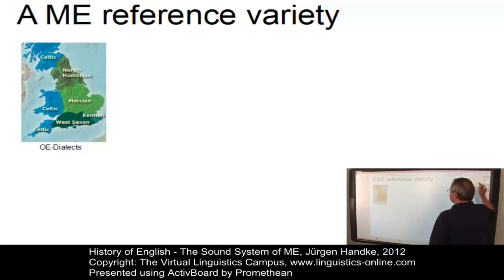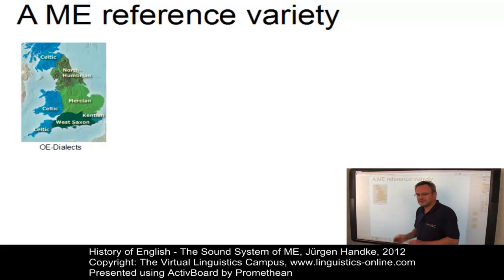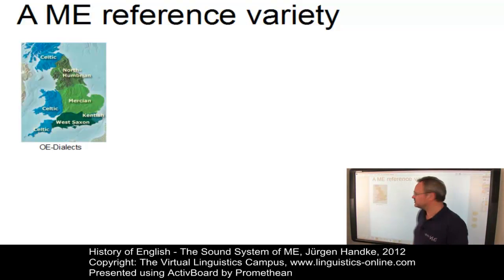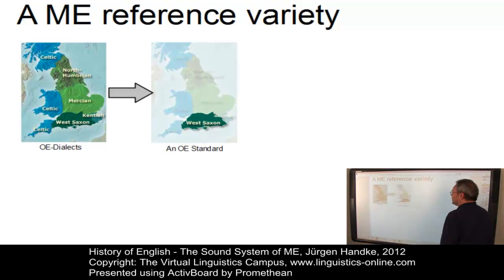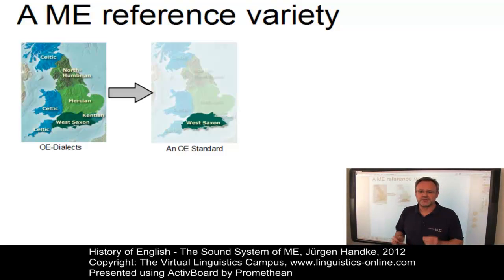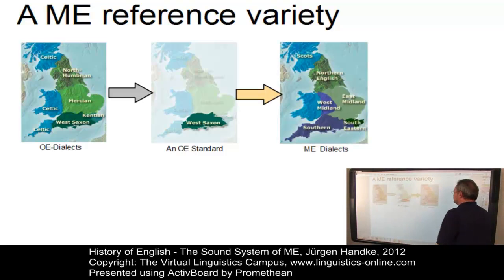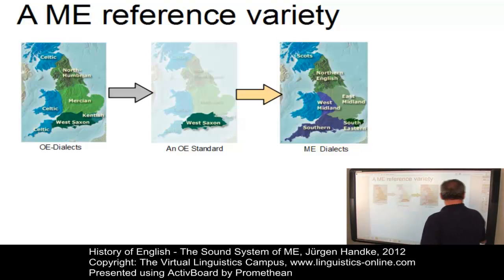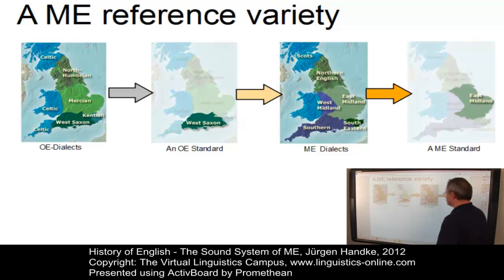During the Middle English period, which lasted from 1100 to 1500, dialectal differences were becoming greater than during Anglo-Saxon times, where West Saxon had emerged as some sort of standard. The dialectal situation in Middle English was different, and a new standard was eventually based on London speech, essentially an East Midland dialect.